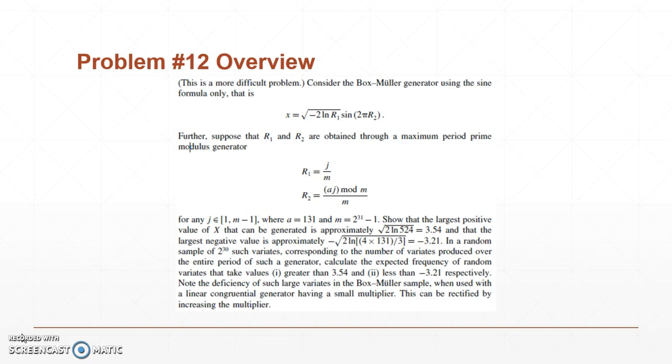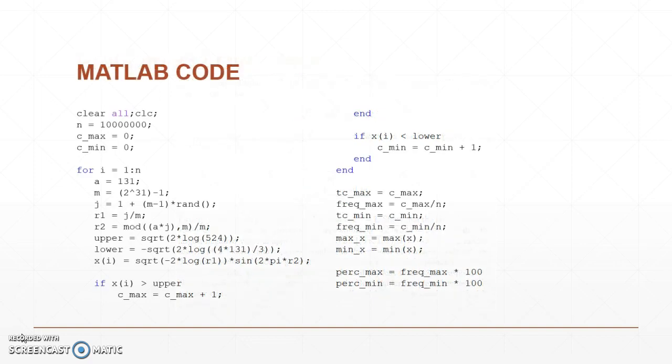What we're doing here is, given a, j, and m, find out through MATLAB how many values you'd have above 3.54 and how many values you'd have below negative 3.21. So here's the MATLAB code.